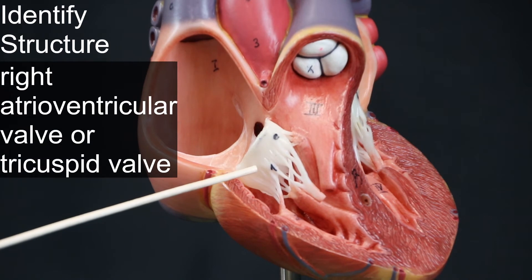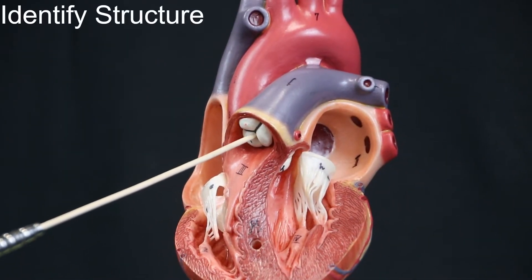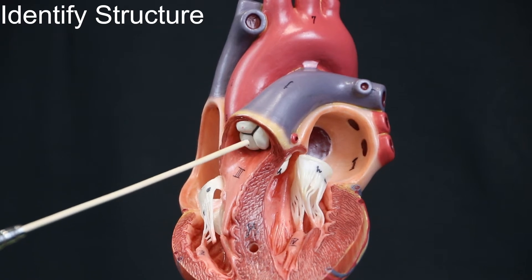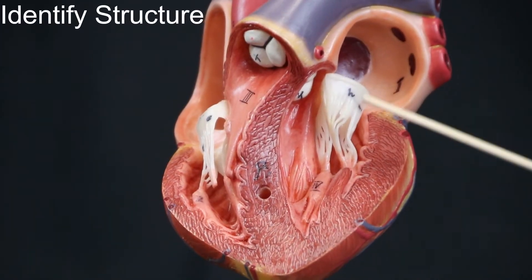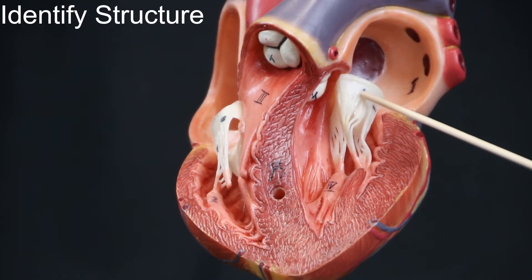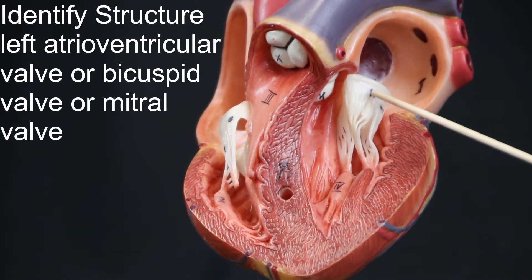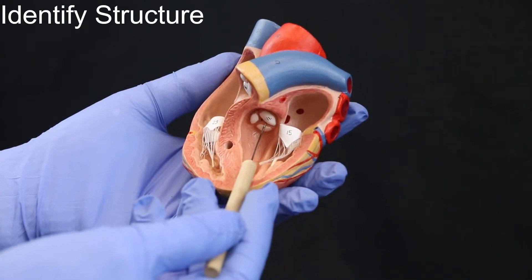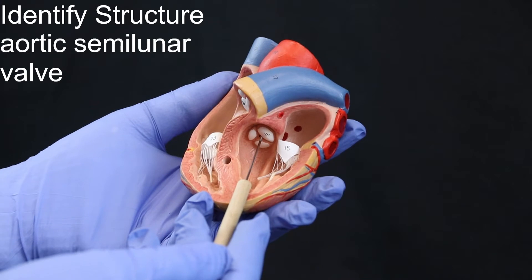The heart valves: The right atrioventricular valve, also known as the tricuspid valve. The left atrioventricular valve, also known as the bicuspid valve or mitral valve. The aortic semilunar valve.